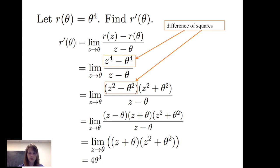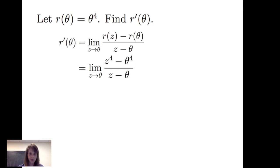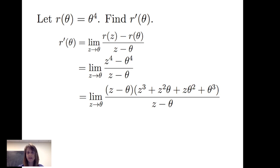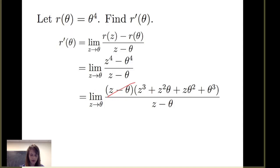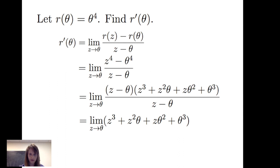Going back, I again consider the limit as z approaches theta of z to the fourth minus theta to the fourth divided by z minus theta, and consider another way of factoring it. Using the difference of powers factorization, I can factor out z minus theta, and the other factor in the numerator is z cubed plus z squared times theta plus z times theta squared plus theta cubed. After canceling z minus theta and evaluating the limit, I again get 4 theta cubed.